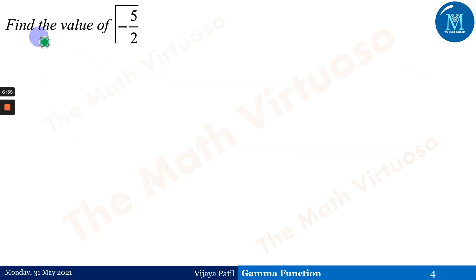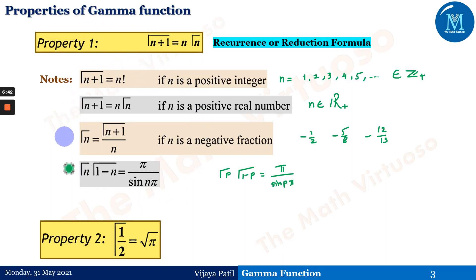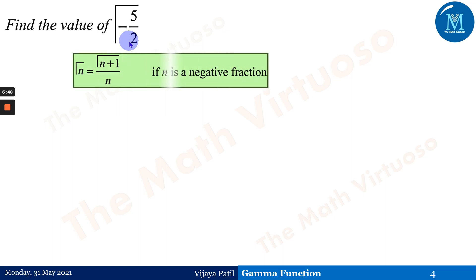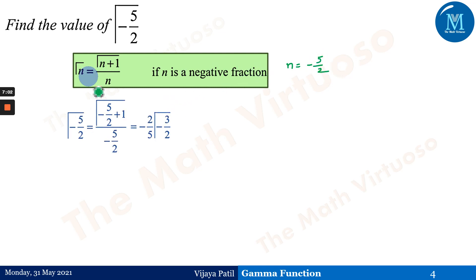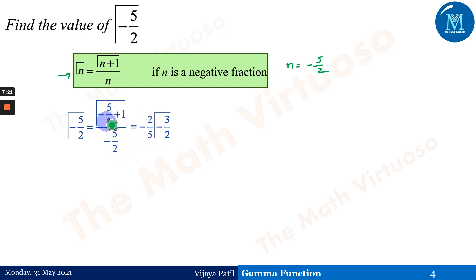Let us look at an example: find the value of gamma of minus 5 by 2. We want to understand when and how to use these properties. Since n equals minus 5 by 2 is a negative fraction, we use gamma of n equals gamma of n plus 1 divided by n. Substituting n equals minus 5 by 2 gives gamma of minus 5 by 2 equals minus 2 by 5 times gamma of minus 3 by 2.